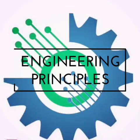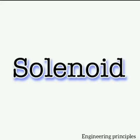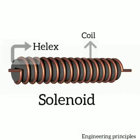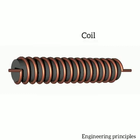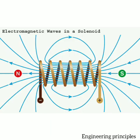Hi friends, welcome to Engineering Principles. Now we are going to discuss about solenoid. A solenoid is a type of electromagnet, the purpose of which is to generate a controlled magnetic field through a coil wound into a tightly packed helix. The coil can be arranged to produce a uniform magnetic field in a volume of space when an electric current is passed through it.